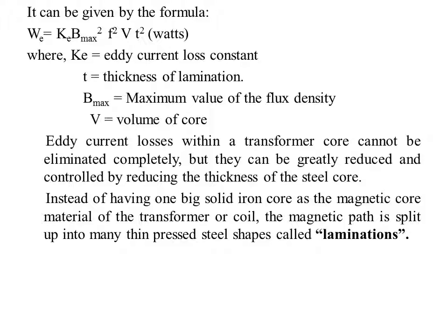Eddy current loss is given by: We = Ke Bmax² f² t², where Ke is the eddy current constant, t is the thickness of the lamination, V is the volume of the core, Bmax is the maximum flux density, and f is the frequency of magnetic reversal. Eddy current loss can be reduced by laminating the core — many small thin layers are stacked together to form the steel core. Due to this lamination, eddy current loss can be largely reduced.